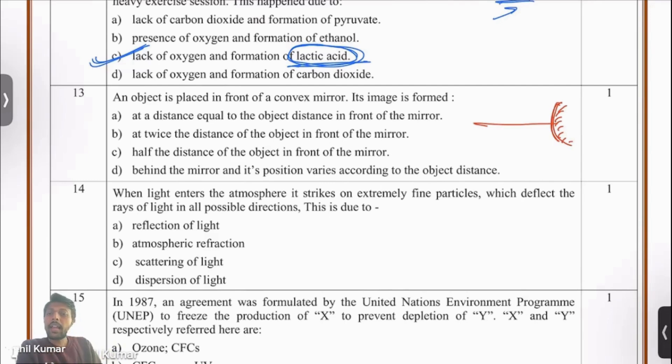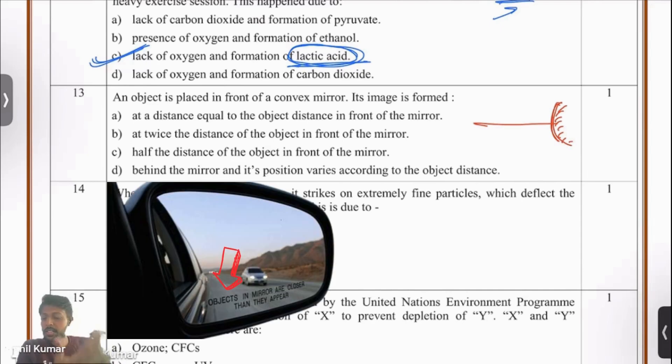How are the images formed? Let's look at the options. At a distance equal to the object? No, definitely not. Because if you look at the convex mirrors in your vehicles, it says objects in the mirror are closer than they appear. That's a warning. You might think that there is a vehicle too far away behind but that's not the truth. It's closer than it appears. So option A is definitely not correct.